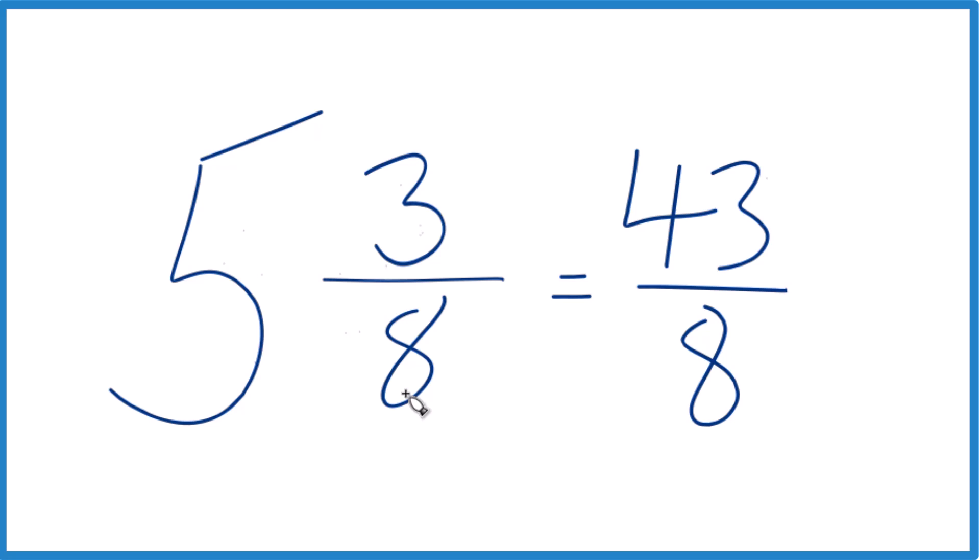5 times 8 is 40, 40 plus 3. That's the numerator. Bring the denominator across. You're done.